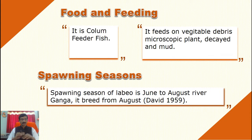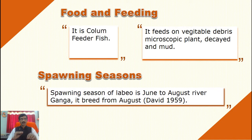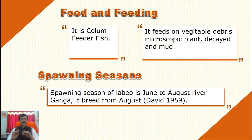The food and feeding habit of Labeo: it is a column feeder fish, as the mouth is subterminal. It feeds on vegetables, debris, microscopic plants, decayed matter, and mud. It is purely herbivorous in nature.